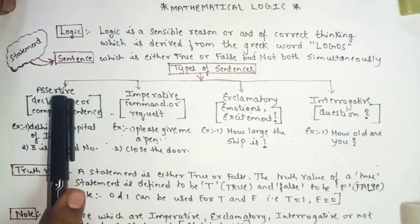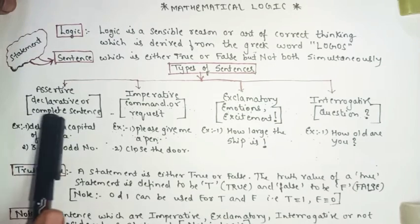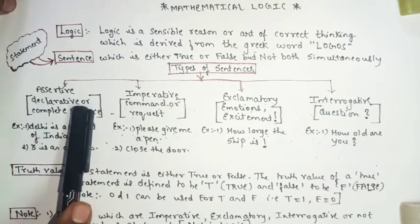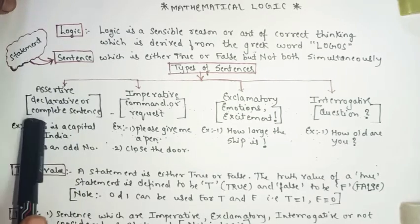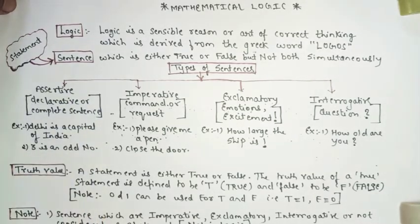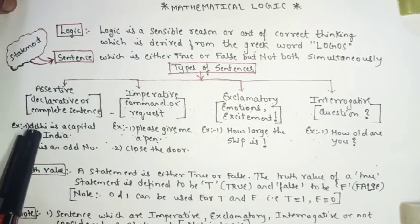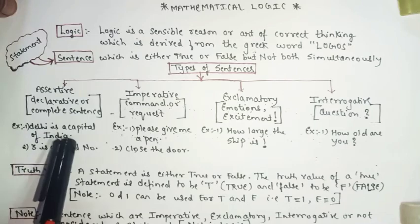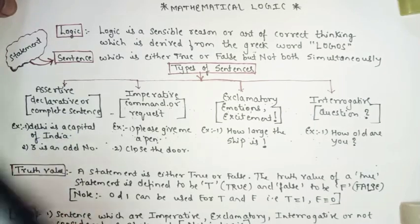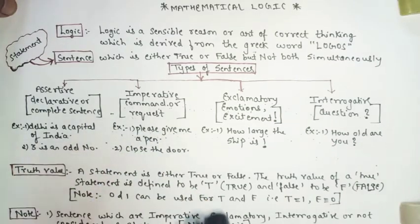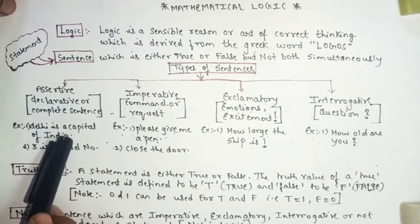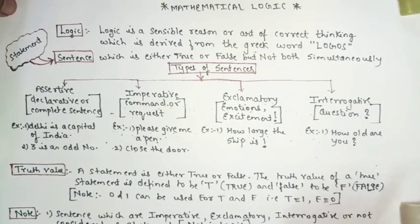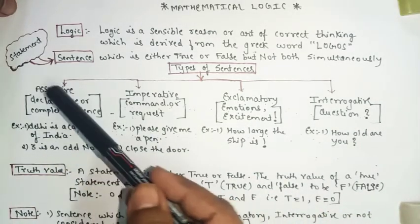The first type is Assertive — also known as a complete or declarative sentence. A complete, declarative sentence is known as an assertive sentence. For example: 'Delhi is the capital of India.' When you read this sentence, it is clean, clear, complete, and there is a sense in it. Another example: '3 is an odd number.' So here I have two examples for the assertive sentence type.